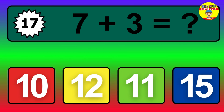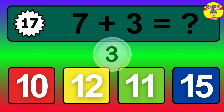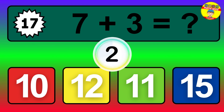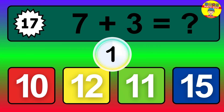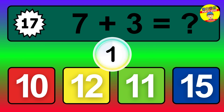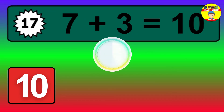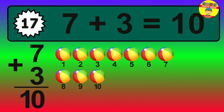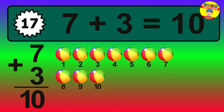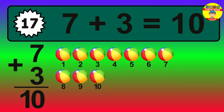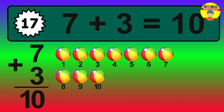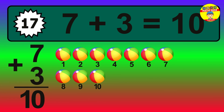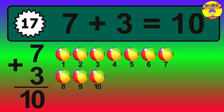Question 17. 7 plus 3 equals what? The answer is 7 plus 3 is 10. Let's count it: 1, 2, 3, 4, 5, 6, 7, 8, 9, 10.